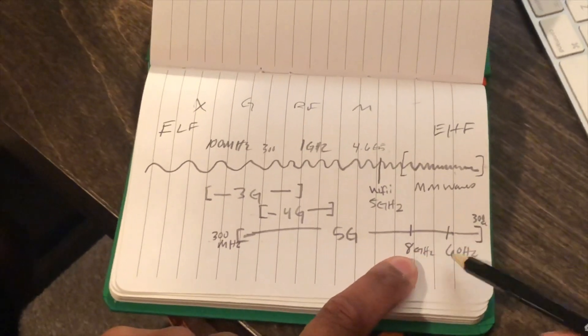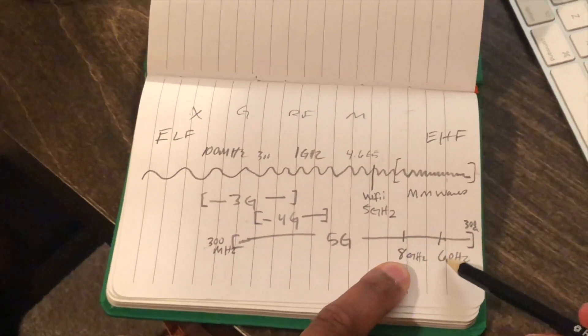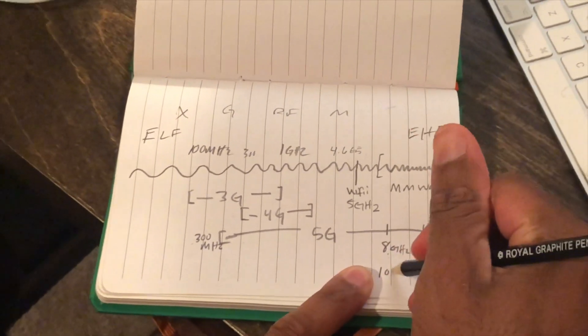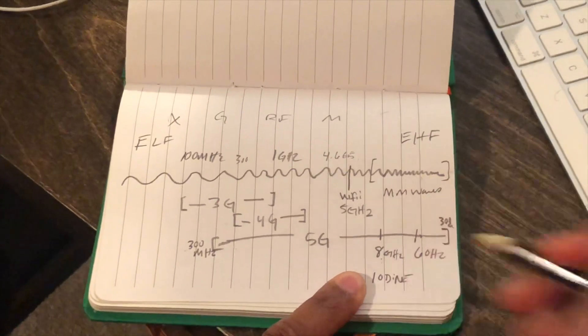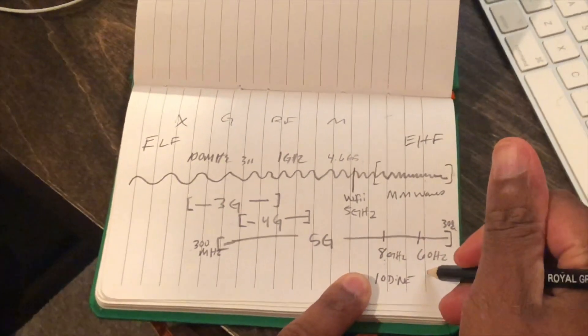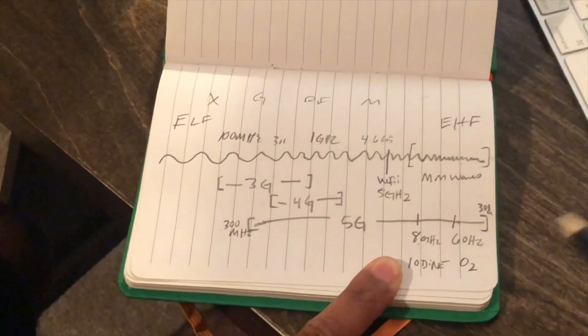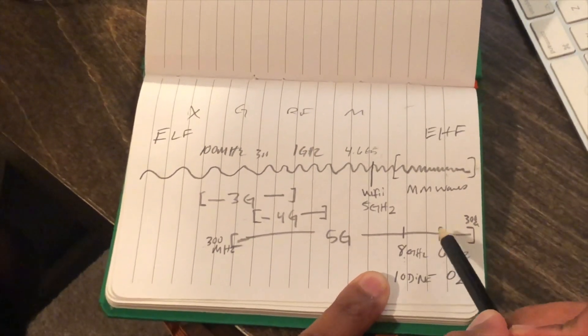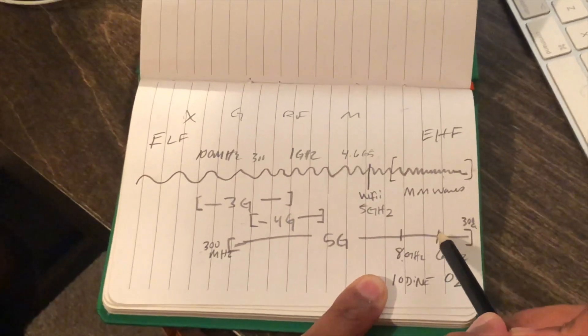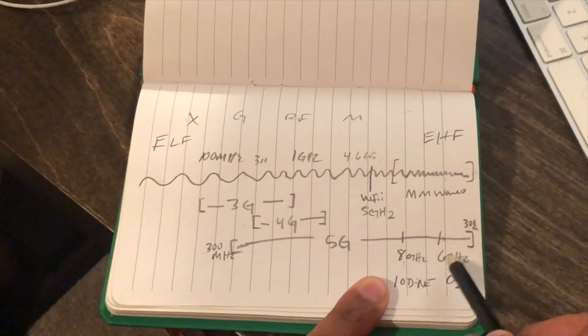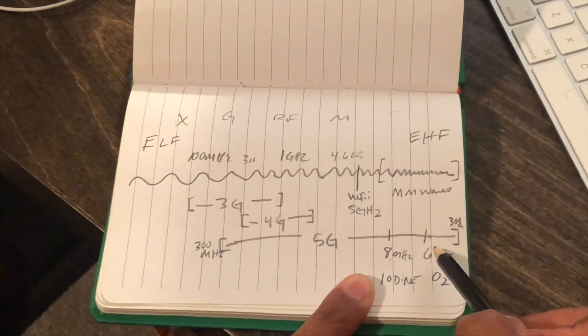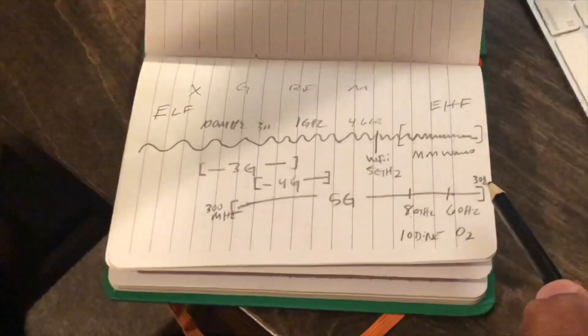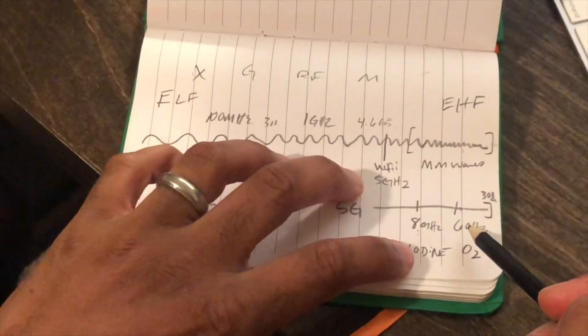The important issue with 5G are these two specific frequencies, and there are probably more, but these are the two that people are most aware of. The 8 gigahertz spectrum, which is the absorption point of iodine, and the 60 gigahertz spectrum, which is the absorption of oxygen. When a frequency is activated, radiation is pulsated out of a tower at this specific frequency.